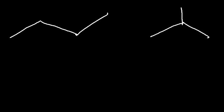For example, how can we draw the constitutional isomers of butane? Now we have four carbons in a straight chain. What we can do is take one of those carbons and put it in the middle. Butane is CH3 CH2 CH2 CH3.